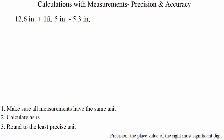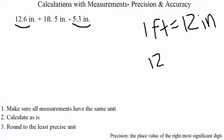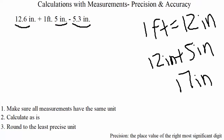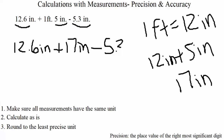Our final example: 12.6 inches plus 1 foot 5 inches minus 5.3 inches. Here we need step one — all measurements must have the same unit. Almost everything is in inches except the middle measurement. Since one foot equals twelve inches, that one foot five inches becomes twelve inches plus five inches, which is seventeen inches. So we are actually calculating 12.6 inches plus 17 inches minus 5.3 inches.